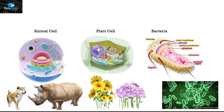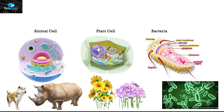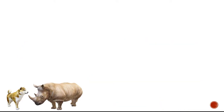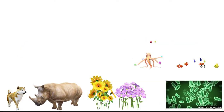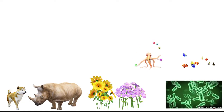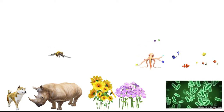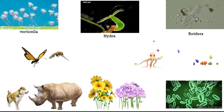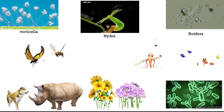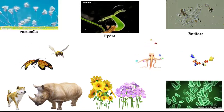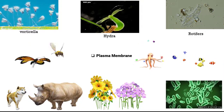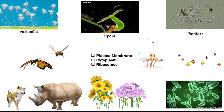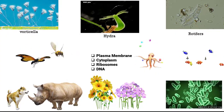We then have animal cells, plant cells, and bacterial cells or unicellular organisms. Despite all the diversity present in our world — including animals, plants, bacteria, fishes, insects, and unicellular organisms — there are four things common in each type of cell: plasma membrane (cell membrane), cytoplasm, ribosomes, and DNA.